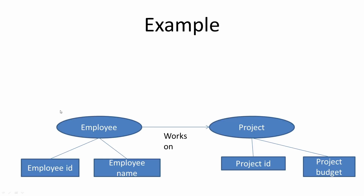Let's look at an example. Say we have two entities: employee and project. Each entity has its own attributes — employee has employee ID and employee name, while project has project ID and project budget. Now to connect them, the employee works on a project, so 'works on' becomes the relationship between these two entities. This is the basic idea of the entity relationship model.